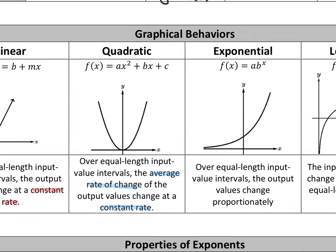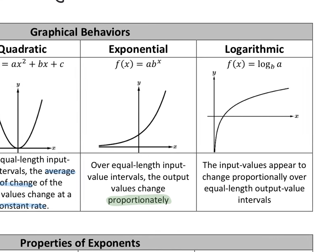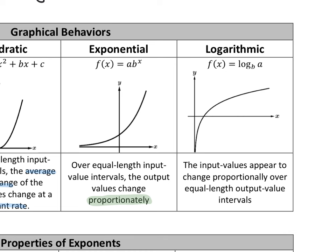Moving into Unit 2, we have two new descriptions for how functions change. For exponential functions, we say: over equal length input value intervals, the output values change proportionately — multiplying by some number each time. The word we use is proportional change. For logarithms, since they're the inverse of exponentials, it's the inputs changing proportionally: the input values appear to change proportionally over equal length output value intervals. Since these are inverses of each other, we've really just swapped the sentences.